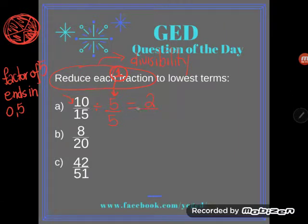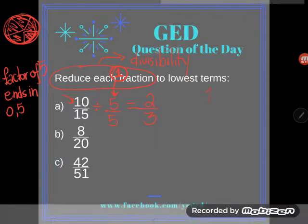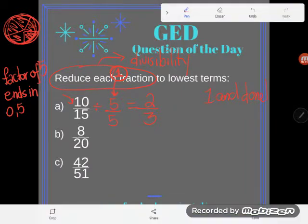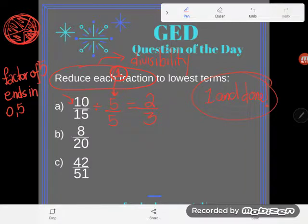So here we go. 10 divided by 5 is 2, and 15 divided by 5 is 3. And I come to a fraction 2 thirds where the only thing they have in common is 1. The only thing that could divide both 2 and 3 evenly with no remainder is 1. And I always say 1 and done. If you get to the point where the only thing that divides them both is 1, you are done reducing your fraction. And that's how you know you're done, not because it looks done, which is what most of my students use.